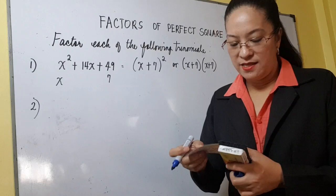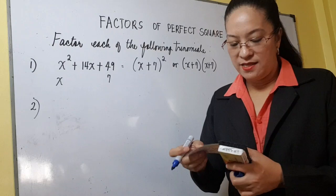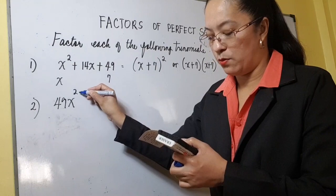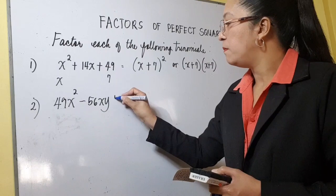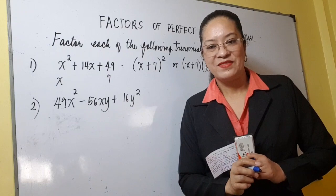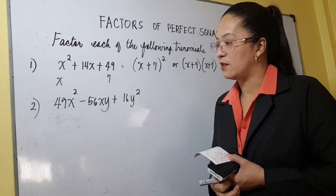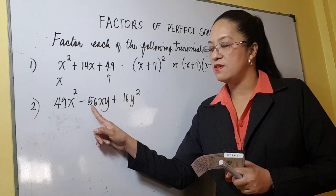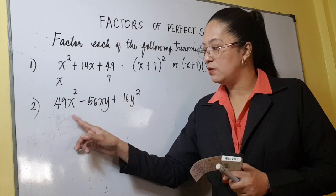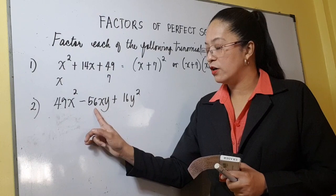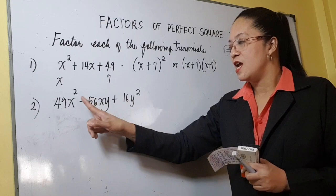Let's try number 2: 49x squared minus 56xy plus 16y squared. Let's see if there's a common monomial factor. 49, 56, 16 — they're both even, but 49 is odd. And this is divisible by 4, also divisible by 4, but 49 is odd. So there's no common monomial factor. There's no x in the last term, no y in the first term, so there's no common monomial factor.